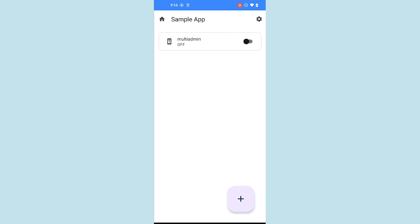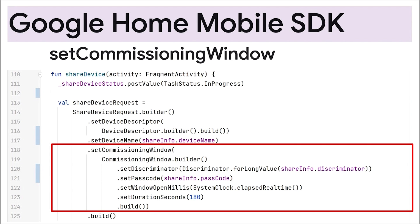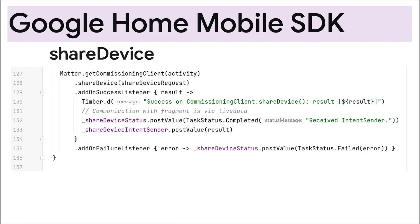Let's go back to Android Studio and see how Pierre did this. We can still use the commissioning client to share devices, but this time we'll declare a share device request. The device descriptor provides specific information about the device, such as its vendor ID, product ID, and device type. We'll also set the device name. Next, we set the commissioning window and pass the device discriminator and passcode. Now that our share device request is set up, we get a commissioning client, then call the share device function. Once again, we'll use live data objects to report the results of our API call.